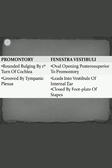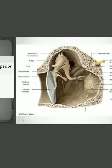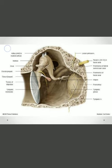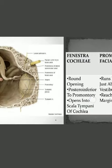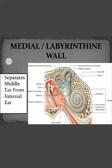The medial wall has some important structures. First is the promontory — a rounded bulge produced by the first turn of the cochlea, and it is grooved by the tympanic plexus. In this figure, this is the medial wall, and this rounded bulge is produced by the first turn of the cochlea — this is the promontory.